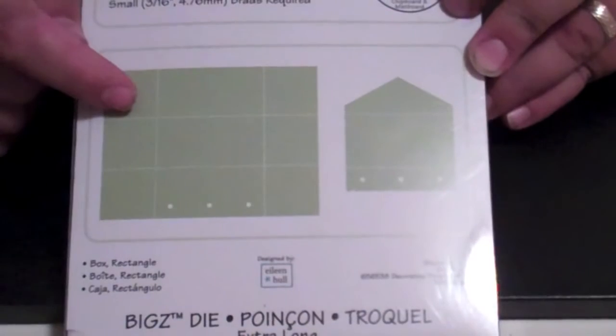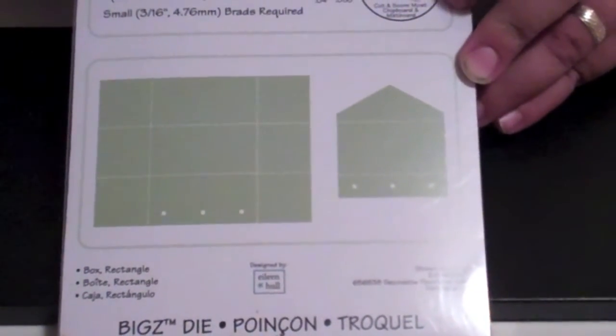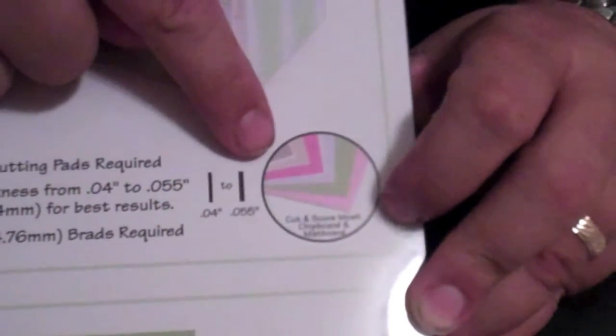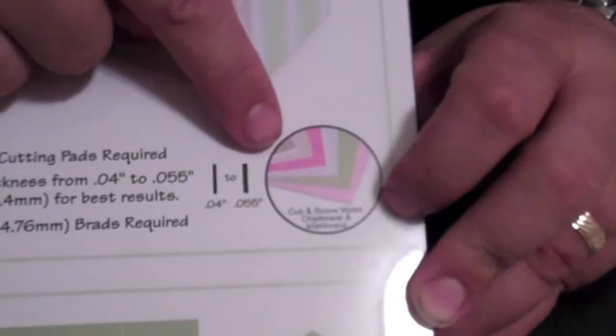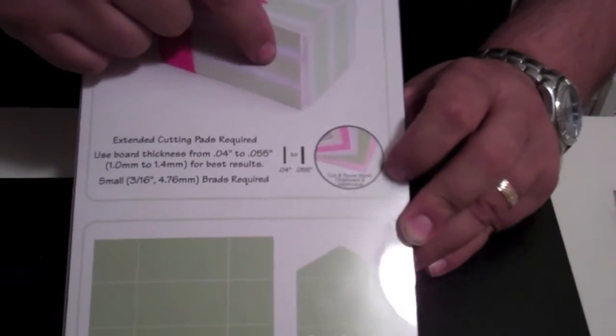Now the great thing about the scoreboard dies is that they say that they like to cut and score on most chipboard and mat board. I tried this with paper, it really didn't work. The scoreboard dies are really, really fun to play with using mat board.